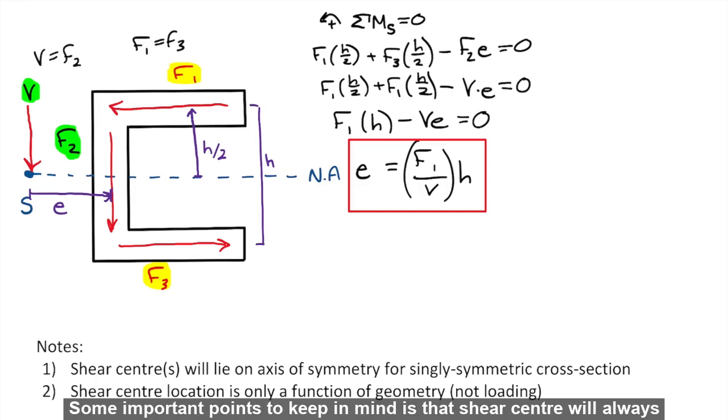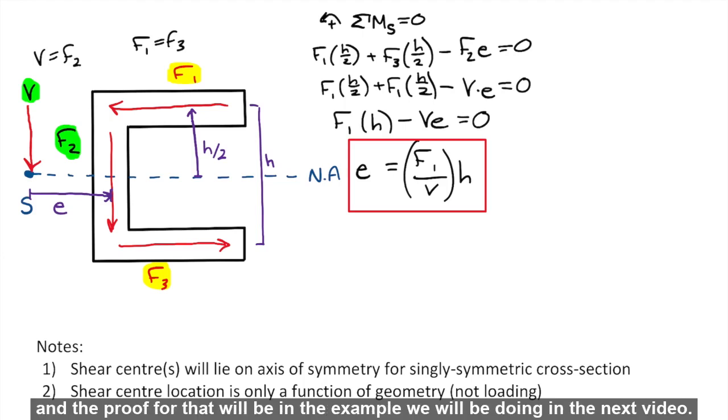Some important points to keep in mind: shear center will always lie on the axis of symmetry for singly symmetric cross sections. The location of the shear center is only a function of the geometry of the cross section and does not depend upon the applied loading. And the proof for that will be in the example we will be doing in the next video.